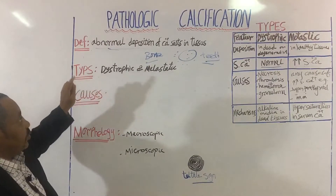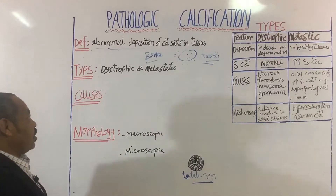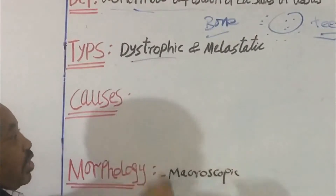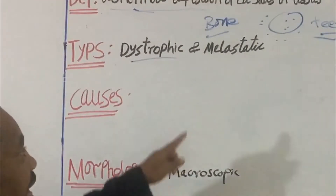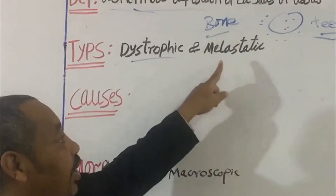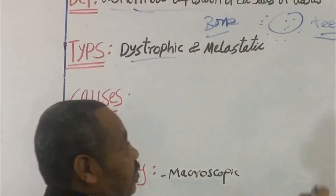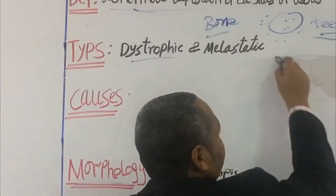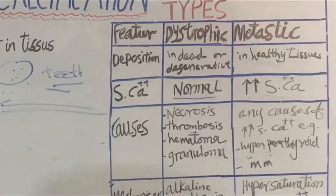Now let us go over the types of calcification. We have two types: number one, dystrophic calcification, which takes place in dead tissue; and metastatic calcification, which takes place in healthy tissues. This table will help us differentiate between the two types.